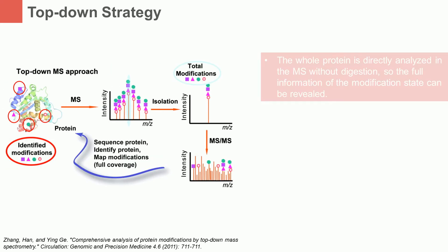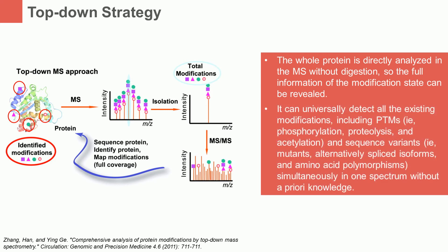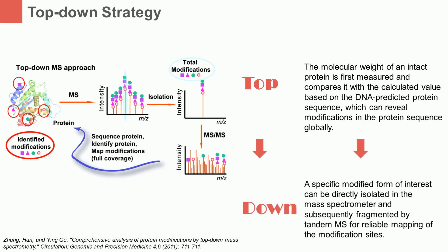Top-down proteomics is becoming a powerful strategy for analysis of protein modifications. For the top-down strategy, the whole protein is directly analyzed in the mass spectrometry without digestion, so the full information of the modification state can be revealed. It can universally detect all the existing modifications, including post-translational modifications and sequence variants like mutants, alternatively spliced isoforms, and amino acid polymorphisms, simultaneously in one spectrum without a priori knowledge. In this strategy, the molecular weight of an intact protein is first measured and compared with the calculated value based on the DNA-predicted protein sequence, which can reveal modifications in the protein sequence globally. A specifically modified form of interest can be directly isolated in the mass spectrometer and subsequently fragmented by tandem mass spectrometry for reliable mapping of the modification sites.